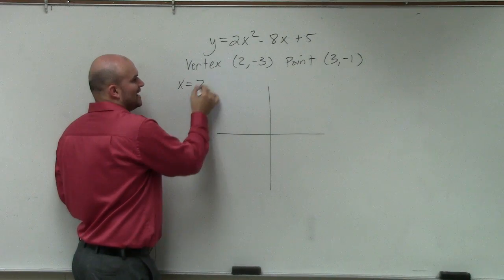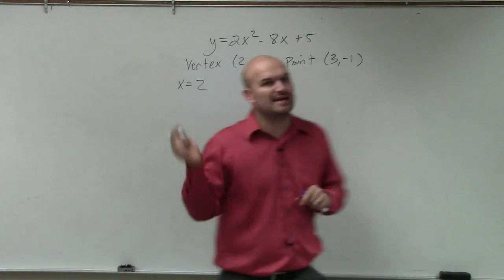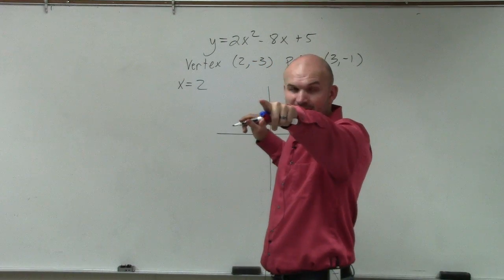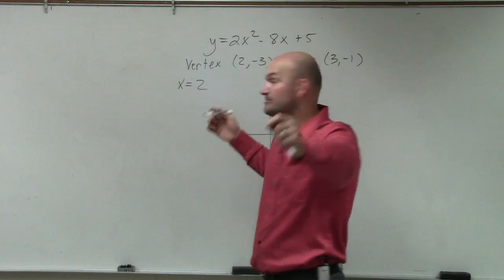If you guys remember, now, obviously, I know the axis of symmetry because I gave you the vertex. But I know on the problem, I didn't give you the vertex. But could everybody find, not the vertex, the axis of symmetry? Could everybody find the axis of symmetry?